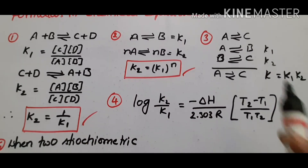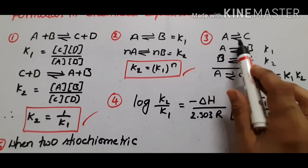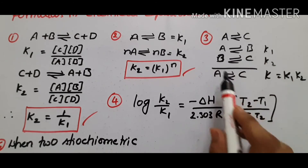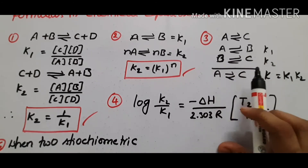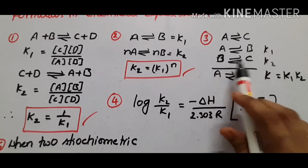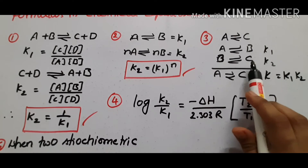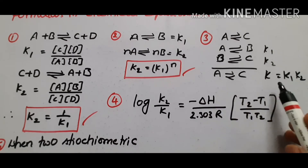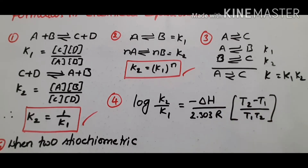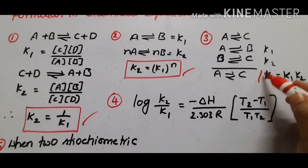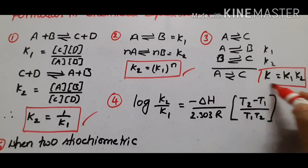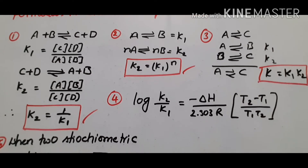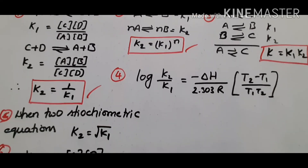The third relation: if a reaction proceeds in two stoichiometric steps — reaction A to B and B to C — each with equilibrium constants K1 and K2, then the total reaction equilibrium constant equals K1 into K2.